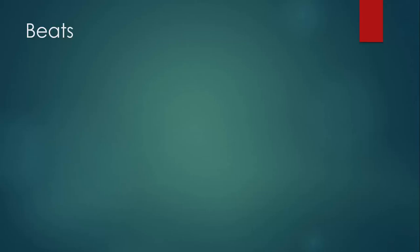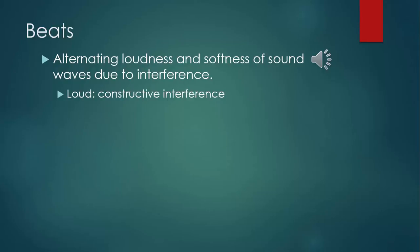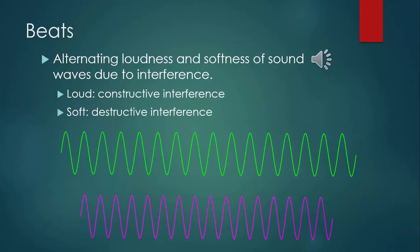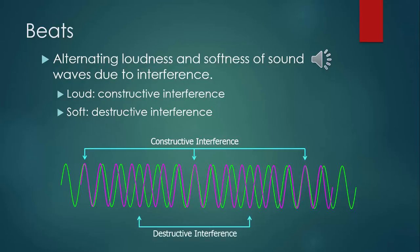The other phenomenon — which also relates to music — is called beats. Beats are the alternating loudness and softness of a sound wave due to interference. The loud part is caused by constructive interference, and the soft part is caused by destructive interference. Here's a visual example: a green wave and a pink wave look pretty similar, but when we overlap them, we can see that their wavelengths and frequencies are slightly different. At some places the two waves interfere constructively, causing the louder part of the sound; at other places they interfere destructively, causing the quieter part.